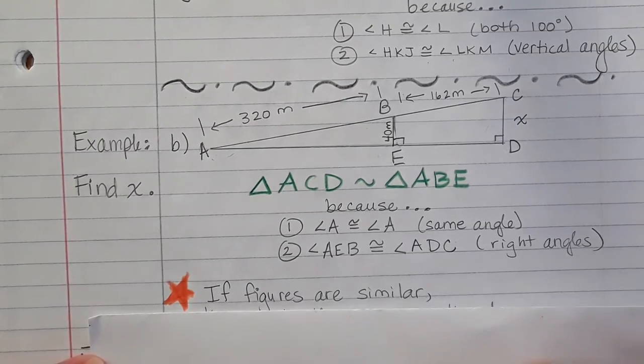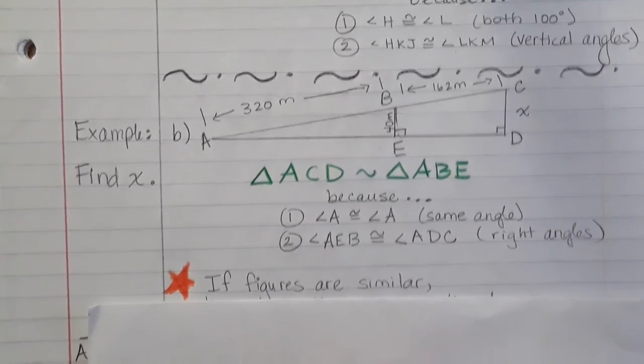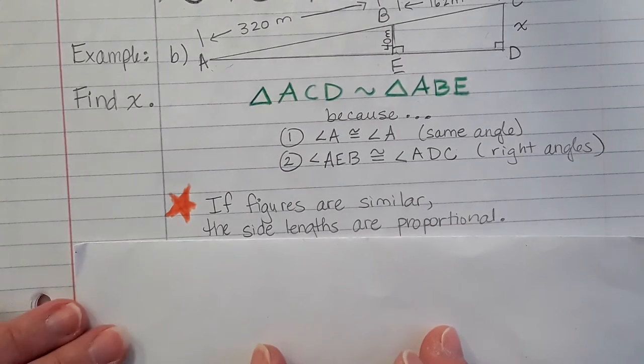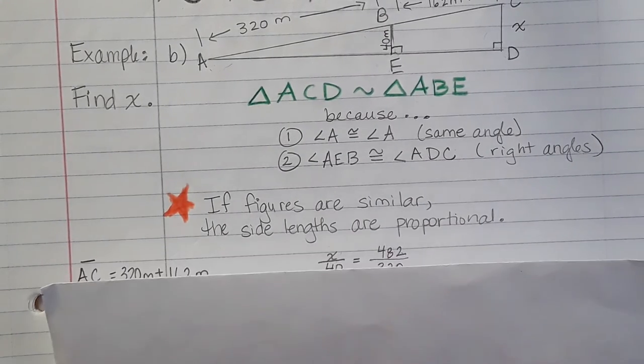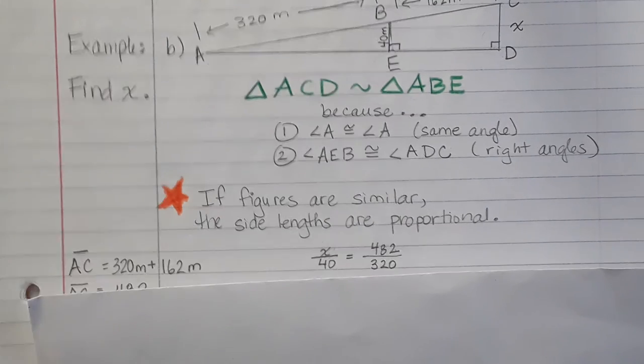So if the figures are similar, the side lengths are proportional. The figures are similar. The side lengths are proportional. I can write this proportion here.